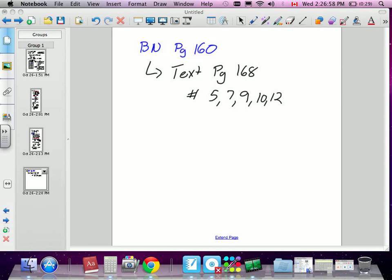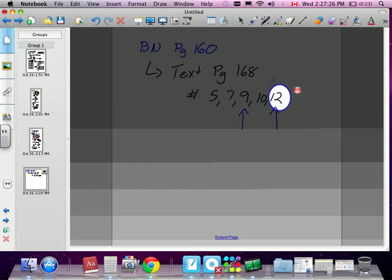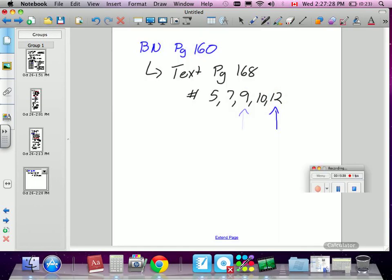Okay, your homework. You're to do it in your blue notebook, page 160. Your blue notebook is telling you to do text page 168. In your book it says to do 5, 7, 10, and 11. I already did 11 for you. So I want you to do number 9, and if you can, number 12 is the hardest type of question.